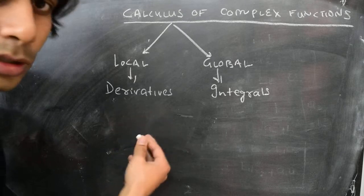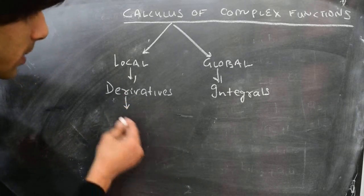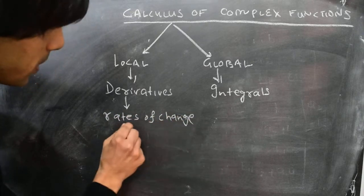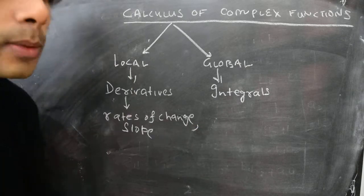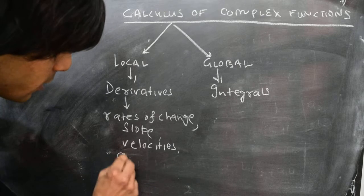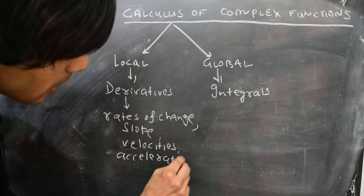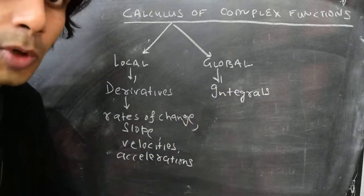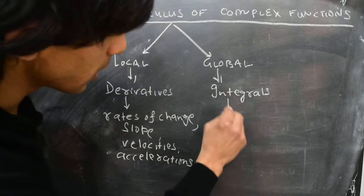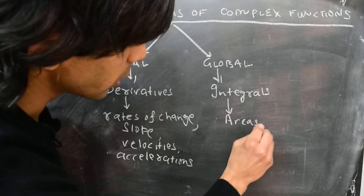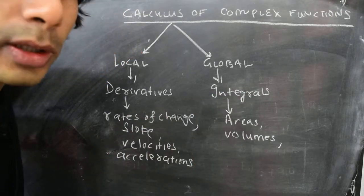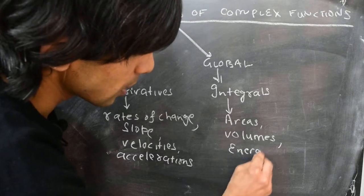A derivative is considered a local property because we are thinking of concepts like rates of change and slope. More physically, we are talking about velocities or accelerations. Whereas when we talk about global properties and integrals, we are talking about concepts like areas and volumes, and from a physics point of view, the total amount of work done or energy expended.